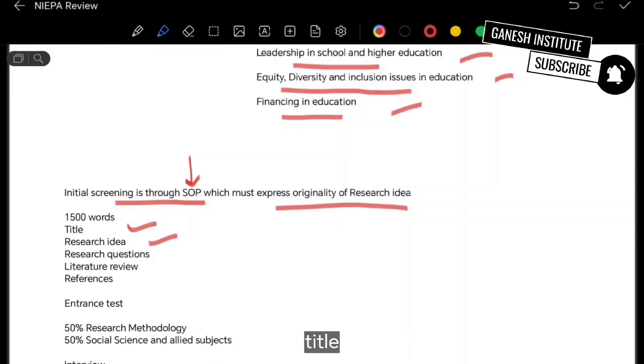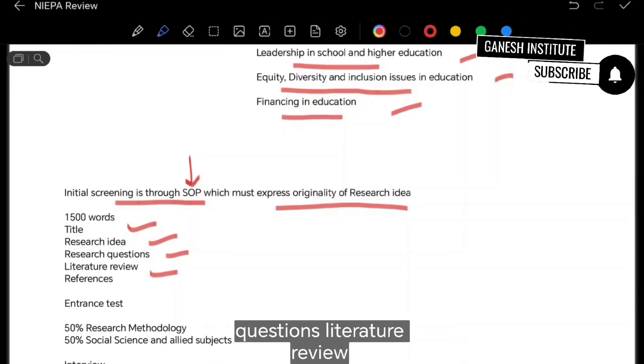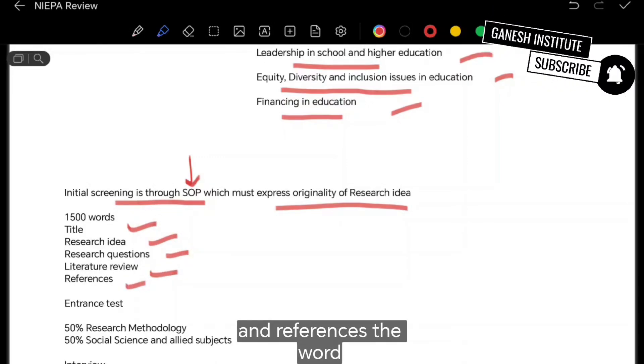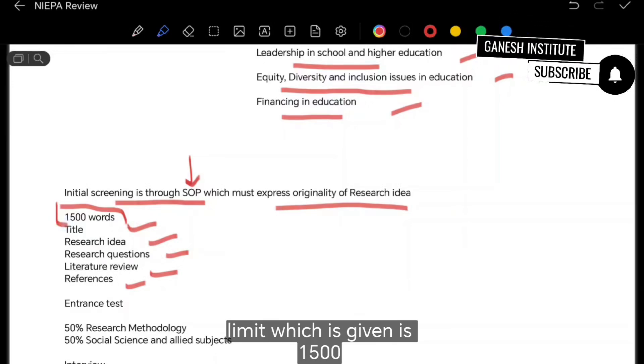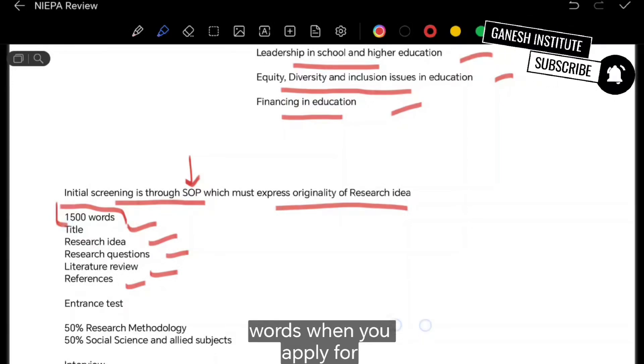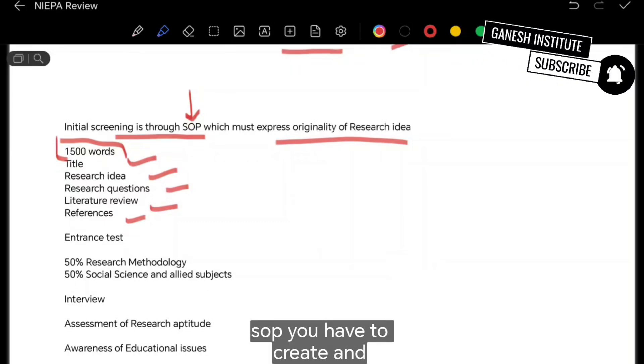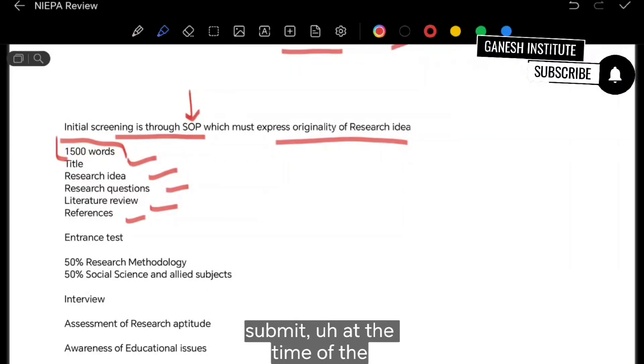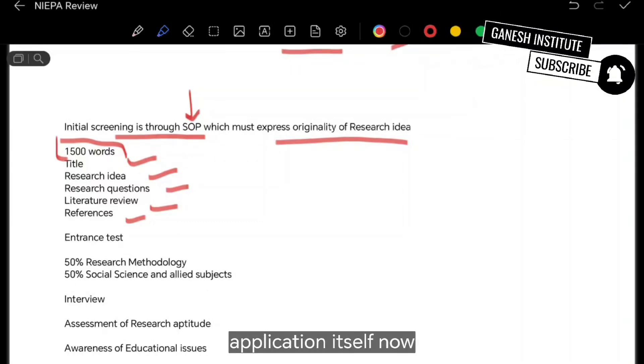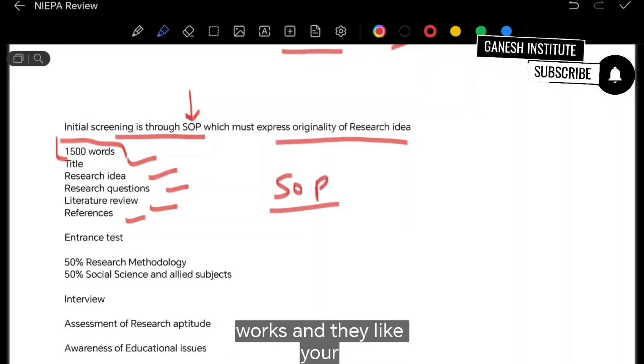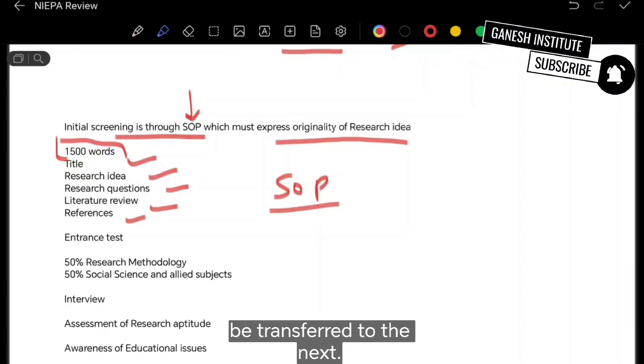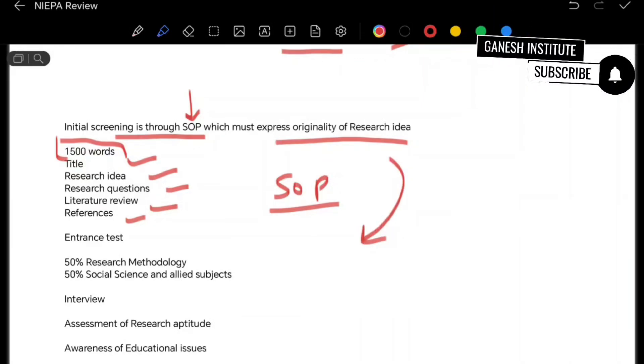The word limit which is given is 1500 words. When you apply for PhD program, so this SOP you have to create and submit at the time of the application itself. Now, if that SOP works, and they like your idea, then you will be transferred to the next phase.